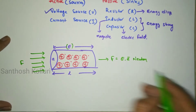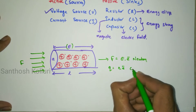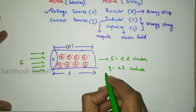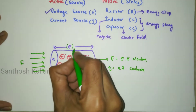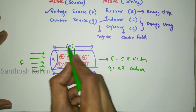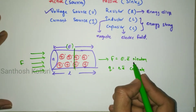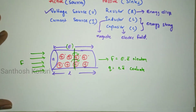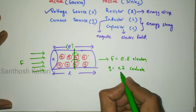The charge of an electron can be given as n into e coulombs, depending upon the number of free electrons crossing a particular barrier. Because of this force, the number of electrons crossing the barrier gives a charge Q, where Q is equal to n into e.